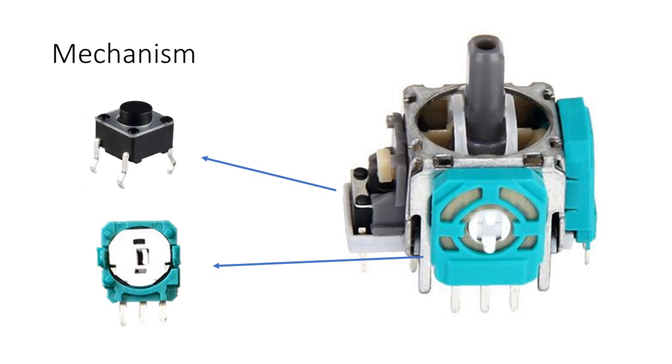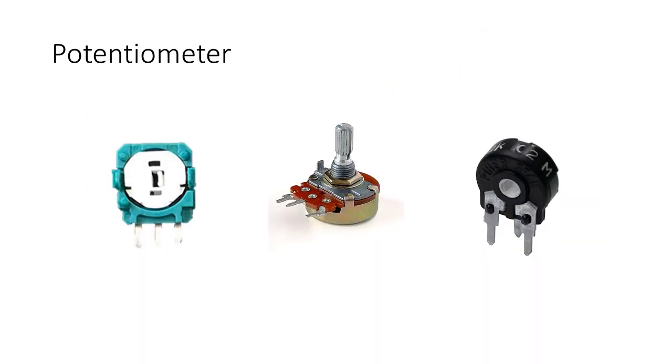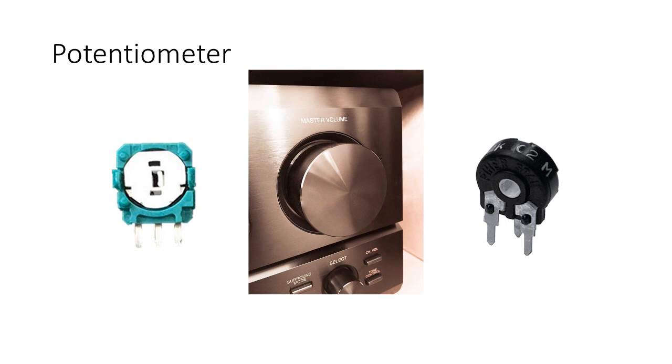The potentiometers is where the problem lies when drifting occurs. Potentiometers are everywhere and aren't rocket science at all. You will find them for example on amplifiers to change the volume. The only difference is that they are a bit bigger and have a knob on them.